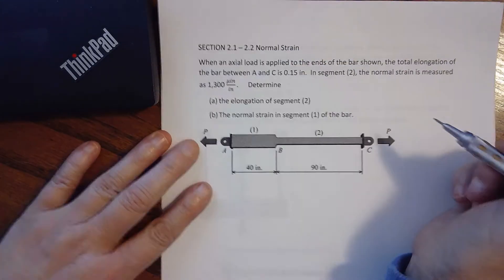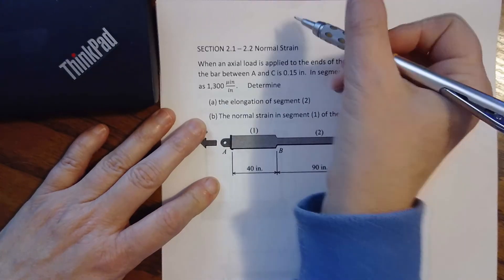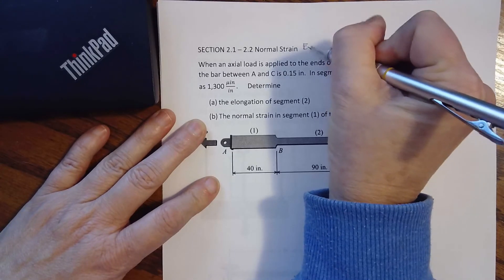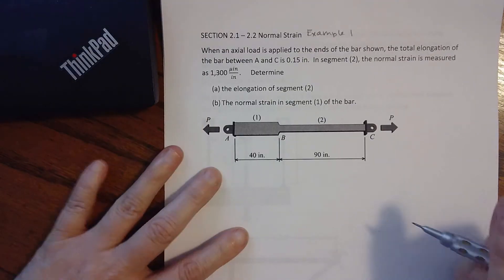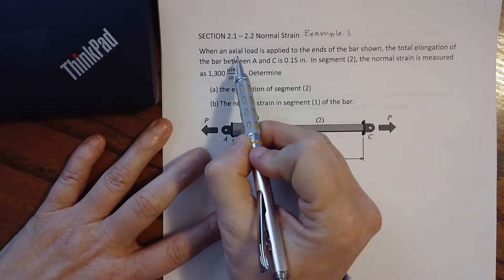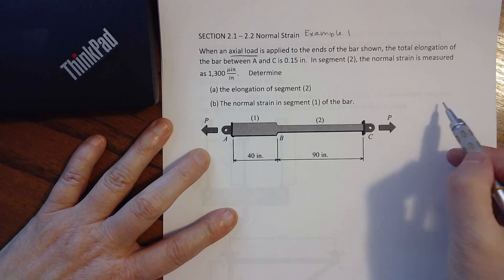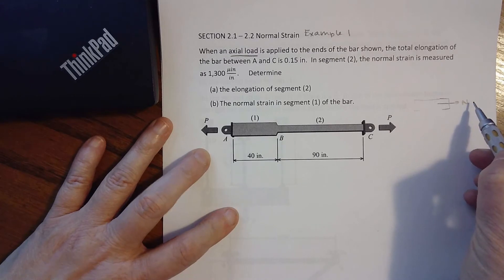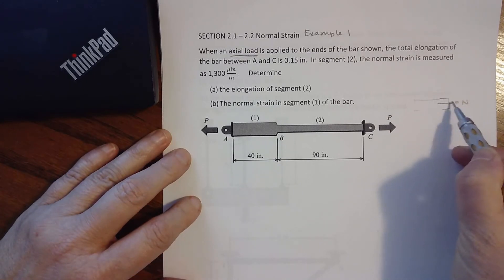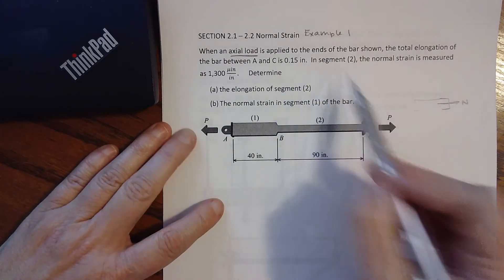Okay, so here we are back. We are in section 2.1 to 2.2 looking at normal strain, this is example one in your packet. So we have an axial load - remember an axial load is acting through that cross-section, that longitudinal cross-section. It's that normal perpendicular load through the cross-section applied to the ends of a bar.